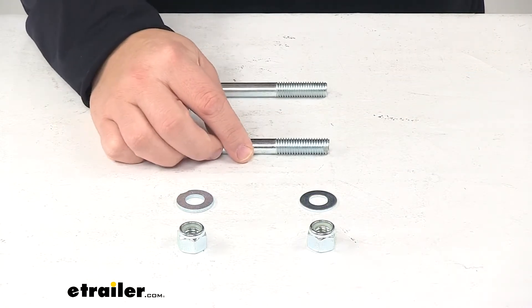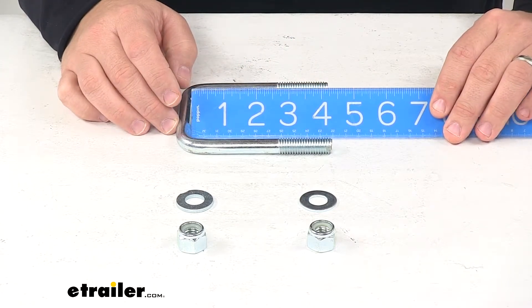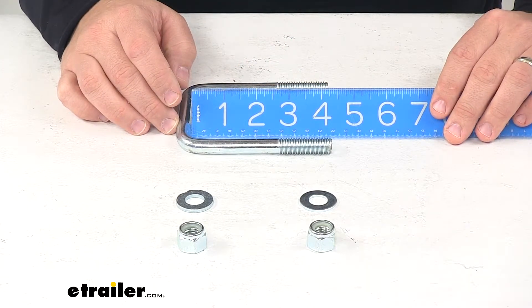The length is measured from the bottom of this bar right here to the end of the threads, which gives us four and one quarter inches.